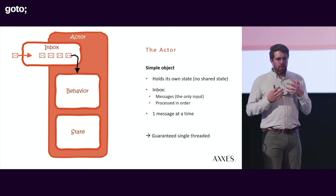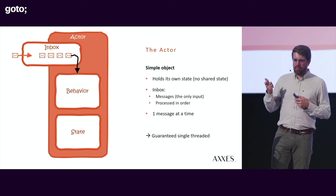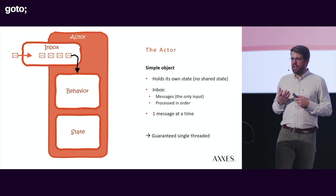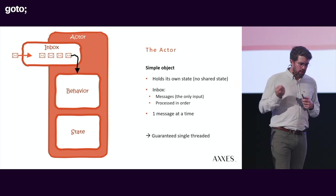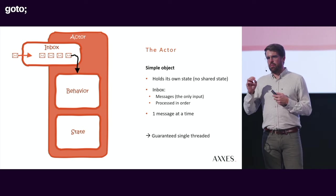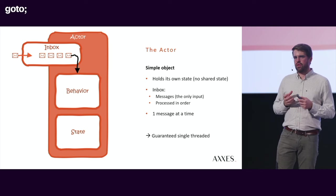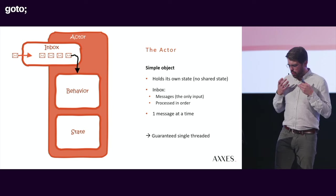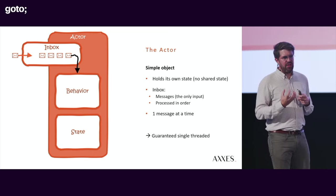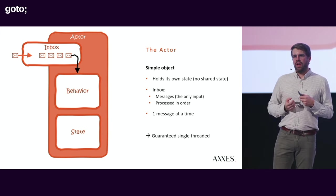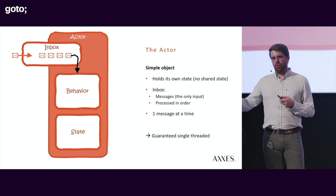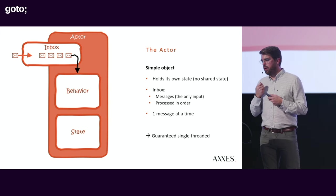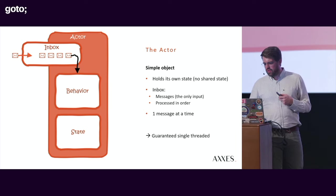The basic building block of an actor system is an actor — a simple instance of a class with an inbox. You send messages to that inbox and they get processed one by one in order on a single thread. There is always only a single message being processed on that instance, so inside your actor you don't have to care about other threads or race conditions. All behavior and state must be internal to the actor; other actors can only access it by sending a message and getting a reply.